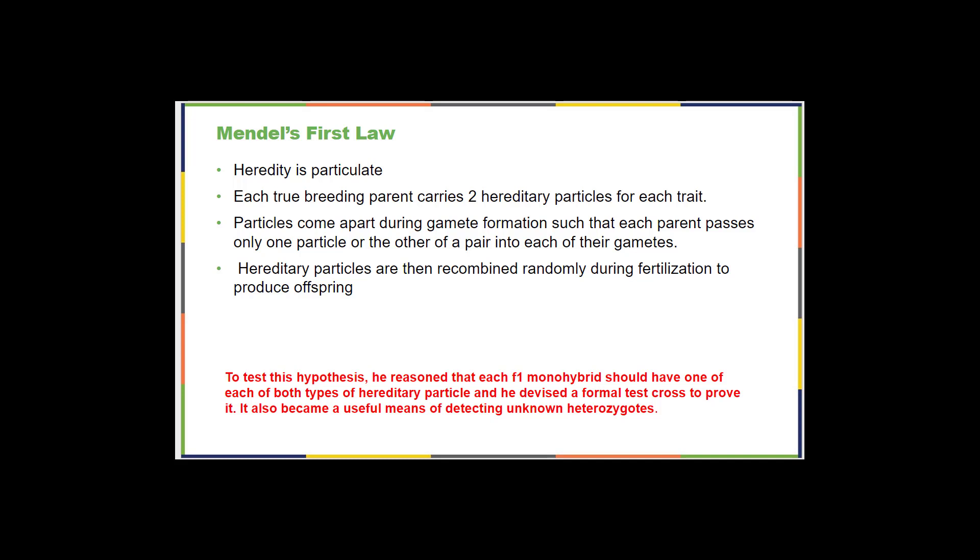These particles have to come apart somehow when gametes are formed so that each parent only passes on one trait into their offspring. So an offspring is 50% mom and 50% dad. However, those particles must be coming together randomly because we know that offspring are not a perfect 50-50 blend, or at least they don't appear that way.